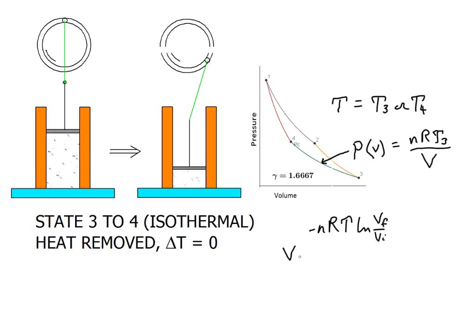Here, V final would be V4, and V initial would be V3. So our work would be equal to minus nR. We can choose T3, we could also choose T4, since they're clearly the same. nRT times the log of V4 over V3.